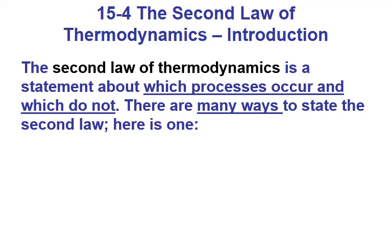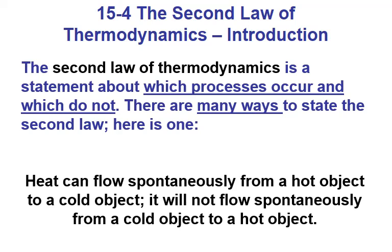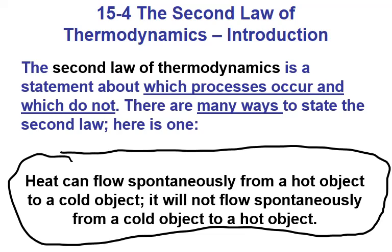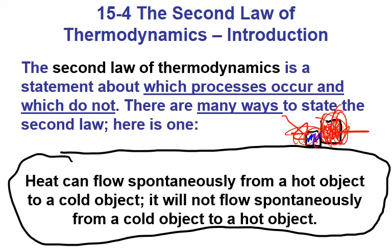The second law describes many processes that don't happen. One that never happens is that heat flows spontaneously from a cold object to a hot object — it will only flow spontaneously from hot to cold. If you have a hot object and a cold object, what's never going to happen is the hot one getting even hotter and the cold one getting even colder, because molecules bouncing around will smash into each other and transfer energy. That's an important part of the second law.